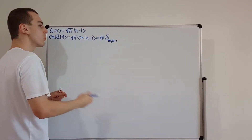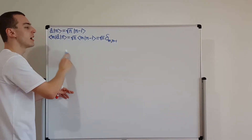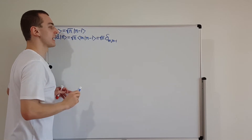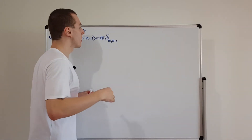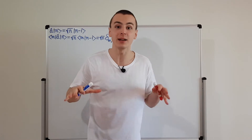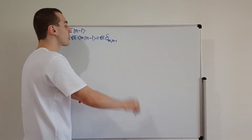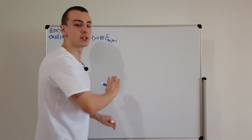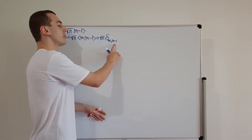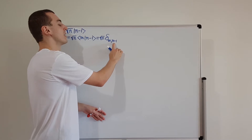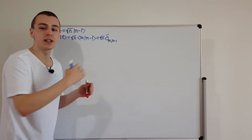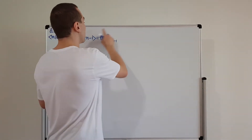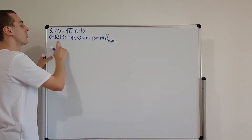In the previous video for the Hamiltonian I got δ(m,n) as the Kronecker delta indices, because the Hamiltonian is diagonal in the energy eigenbasis — all entries on the diagonal, everything else zero. That is not the case here. Here we have n−1, so it's going to be off the diagonal, just 1 to the side. This is the expression we have for â.